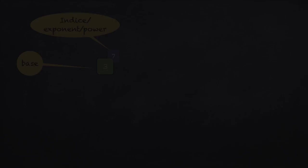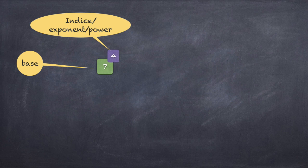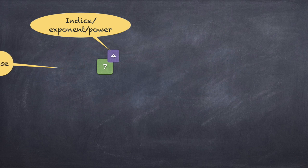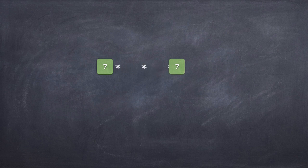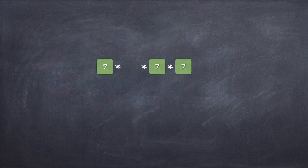Now let's work in the other direction. If I see a number written as '7 raised to 4', then 7 is the base and 4 is the power or exponent. What does 7 raised to 4 mean? If I want to open it up, it means 7 x 7 x 7 x 7, or 7 multiplied by itself 4 times. I hope the idea is getting clearer now.